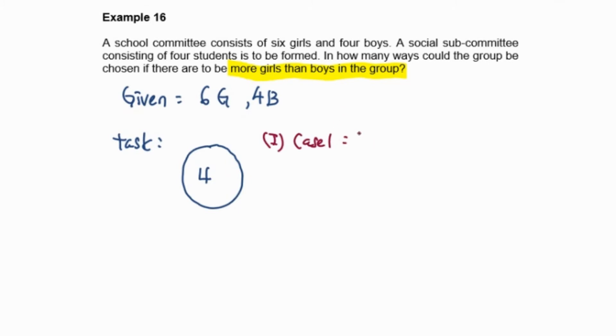Meanwhile for the second case, it can be three girls and one boy. If we continue, two girls two boys, it cannot fulfill the condition because in the question they said this group must have more girls than boys.